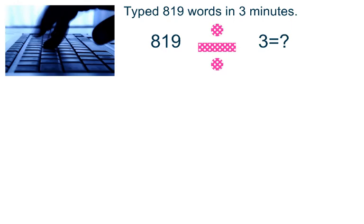In our last problem, we see that you've won a world record on the computer by typing an amazing 819 words in just 3 minutes. Wowzers! How many words did you type per minute? This is a division problem. We're dividing 819 by 3.